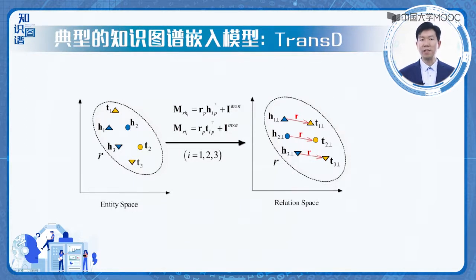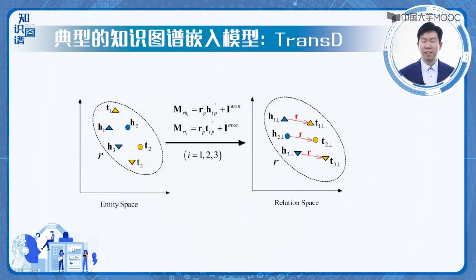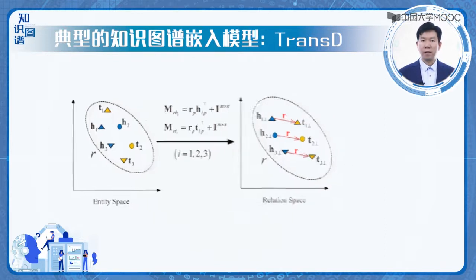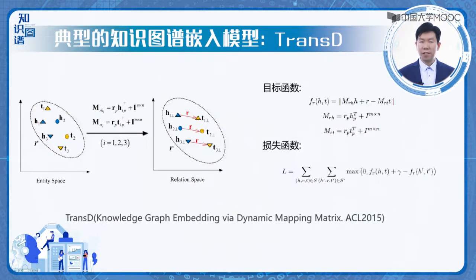所有的头尾节点表示都通过与MR矩阵相乘获得关系空间的表示，然后再进行加法计算。TransD也是通过一个动态映射矩阵来获得关系空间的头尾节点表示，然后再进行加法计算。可以看到，为了区分和处理复杂的关系语义，我们就不得不增加新的参数。参数越多，对知识图谱语料的要求越多，训练的代价也随之增加。因此，平衡语义的建模和表达能力与参数的多少，是设计和选择合适的知识图谱嵌入模型所需要考虑的问题。